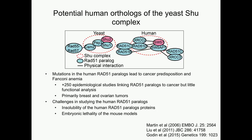The SHU complex is conserved in humans, although the exact components are not completely known. The human SHU complex is composed of RAD51 paralogs, which are proteins that bear structural resemblance to RAD51. Mutations in the human RAD51 paralogs are associated with cancer predisposition and Fanconi anemia, particularly breast and ovarian cancers. Despite hundreds of epidemiological studies linking mutations in the RAD51 paralogs to cancer, we have very little understanding of their function, due to issues including low abundance, insolubility of the human proteins, and embryonic lethality in mouse knockout models.